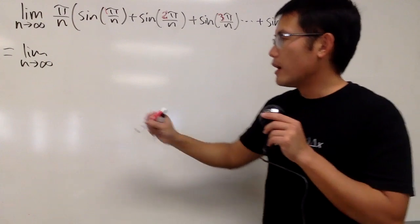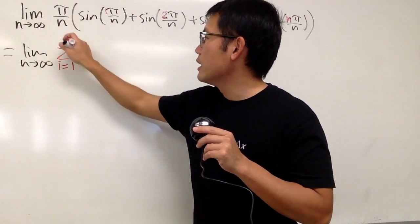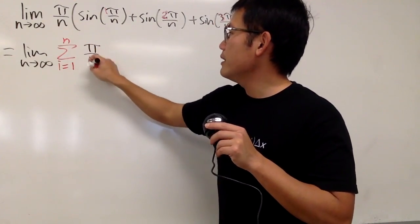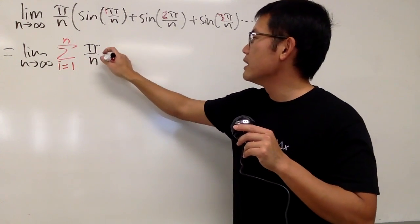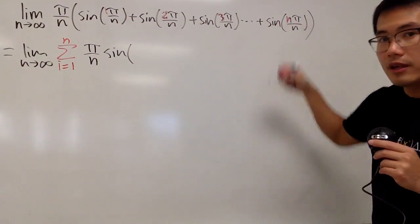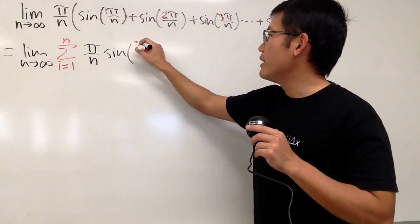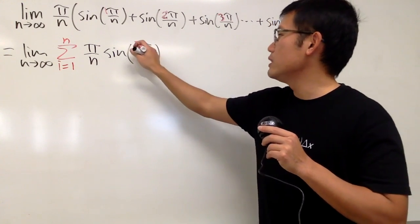So I'm going to now put down the sigma notation, i goes from 1 to n, and I will just put down π over n, and of course everybody has that, so we have this multiplied by sin of, and the red numbers right here will be the i, so we will just put down the i right here, and then the rest is the same, π over n like this, so that's pretty much the idea.